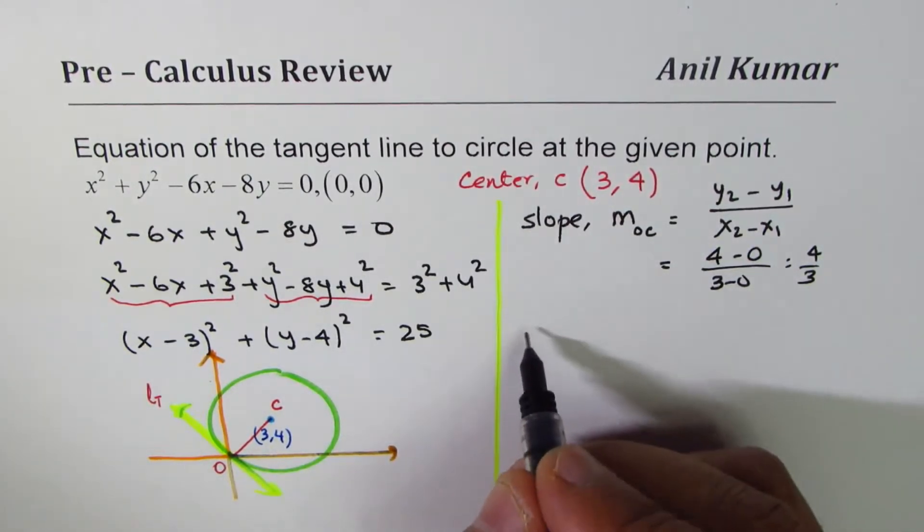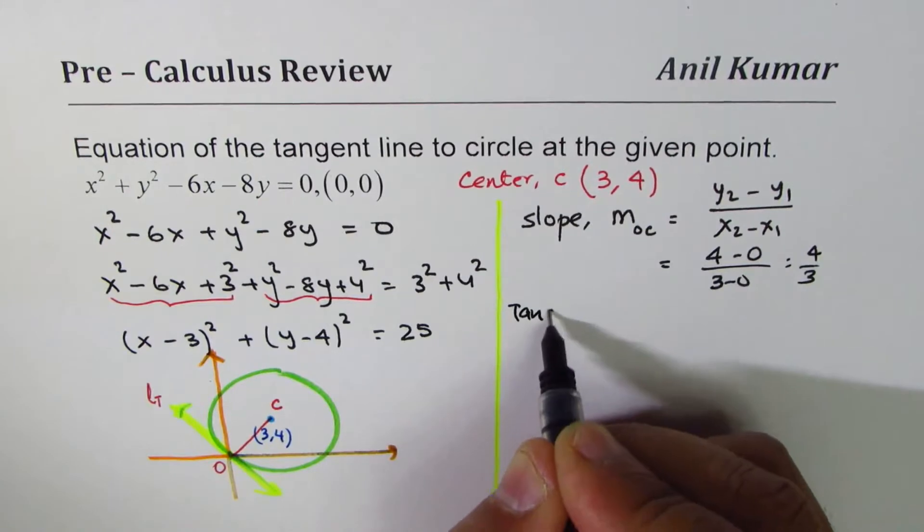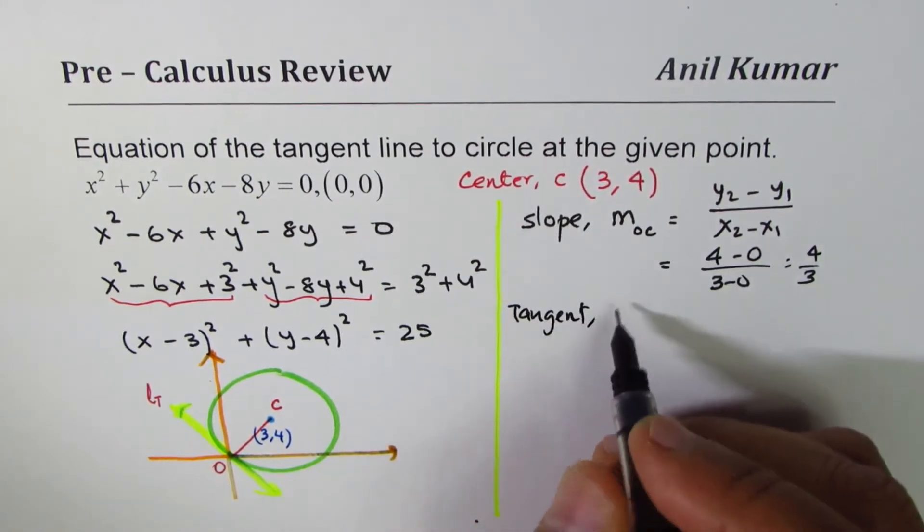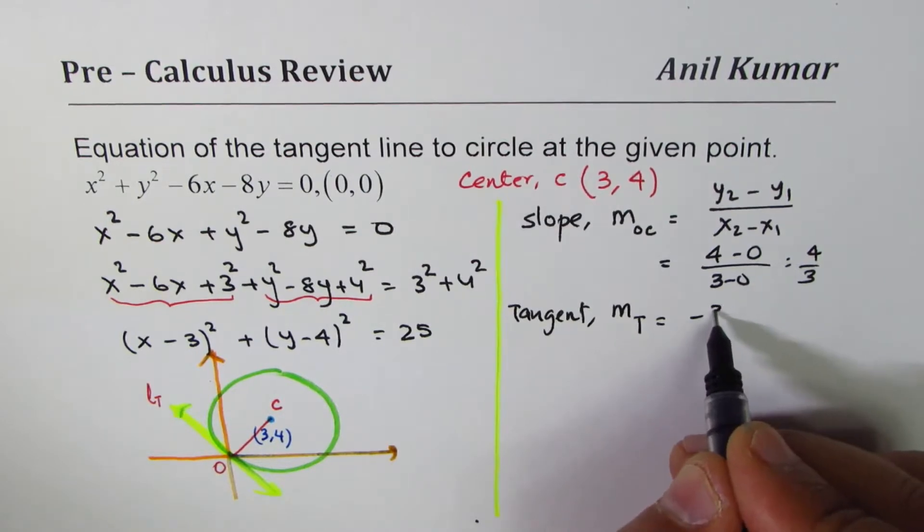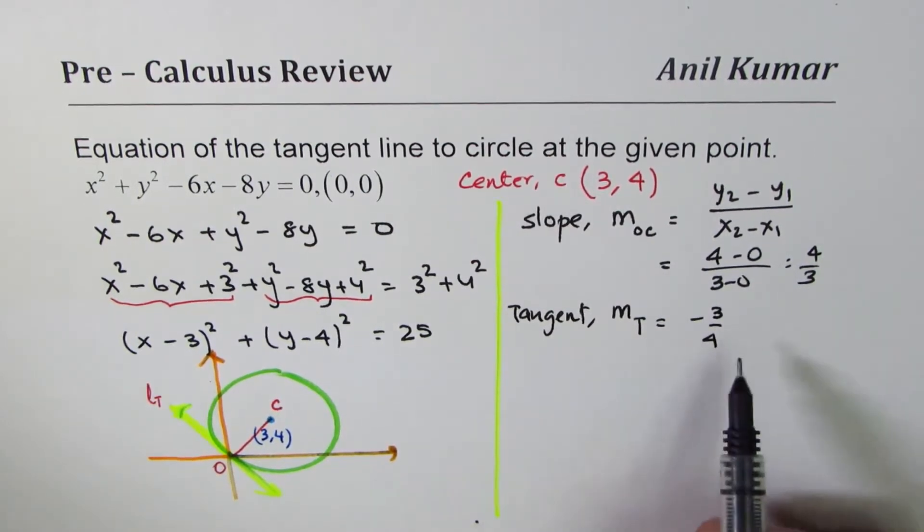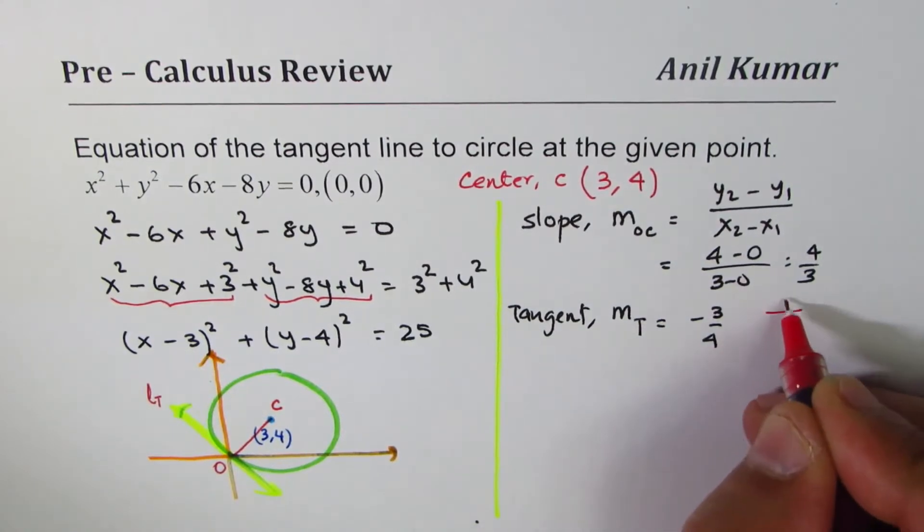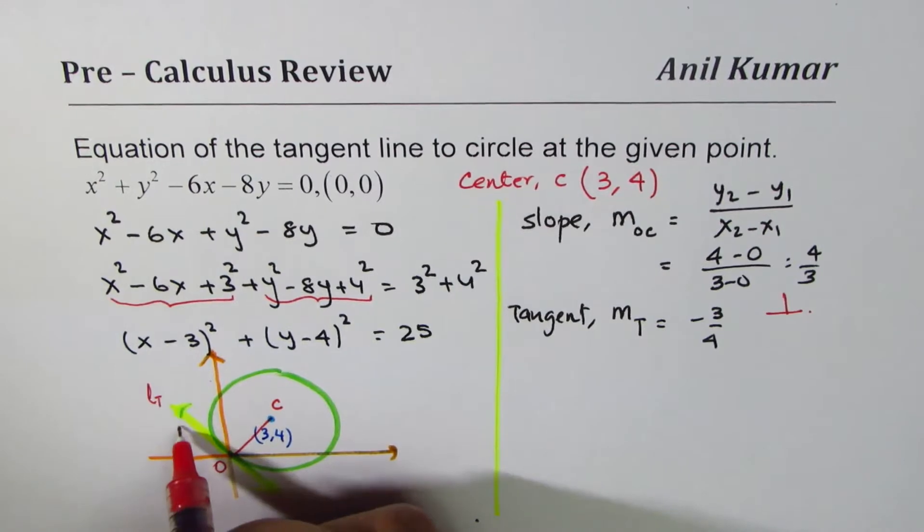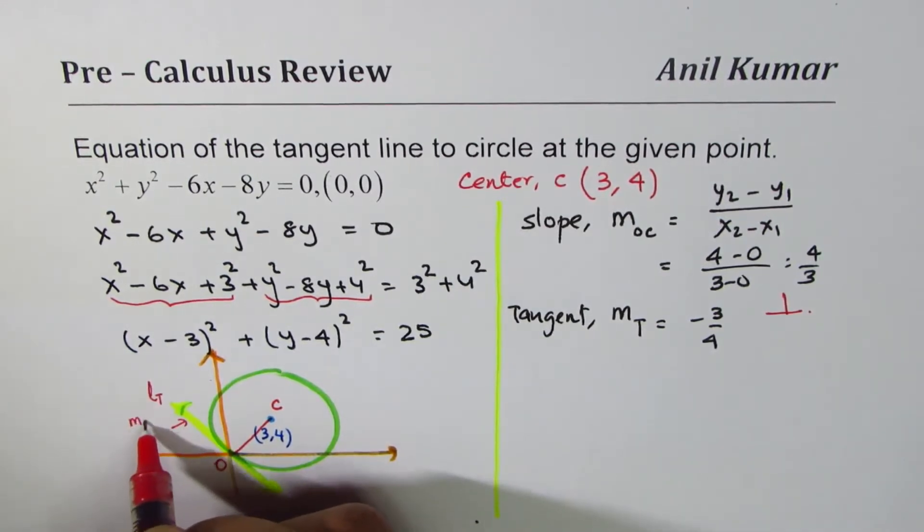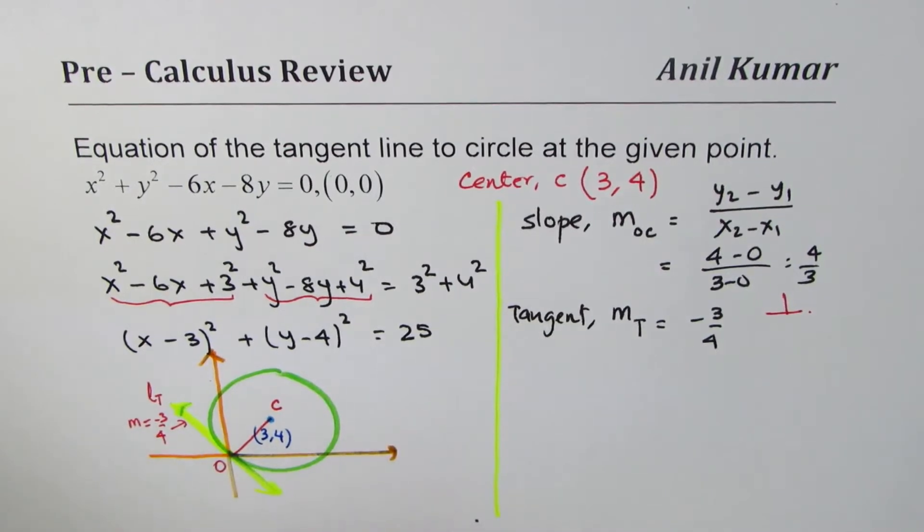How about the slope of tangent line? So tangent slope which we'll call as M_T is negative reciprocal: -3/4. Since it is perpendicular, right? Perpendicular means negative reciprocal. So we know the slope of this line M is -3/4, makes sense going downwards.